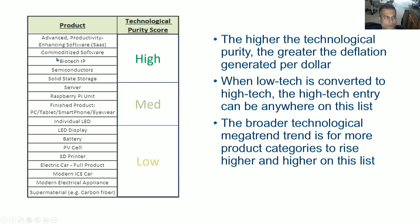The highest tech product that exists in the world today at any substantial scale is advanced productivity-enhancing software. Commoditized software, biotech IP, semiconductors, and solid-state storage are also very high — these have high technological purity.